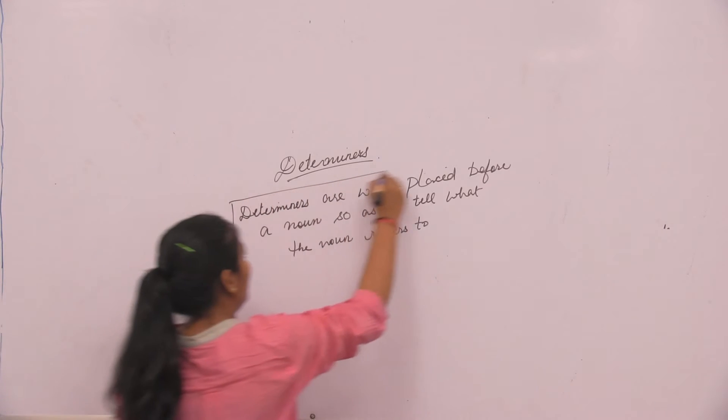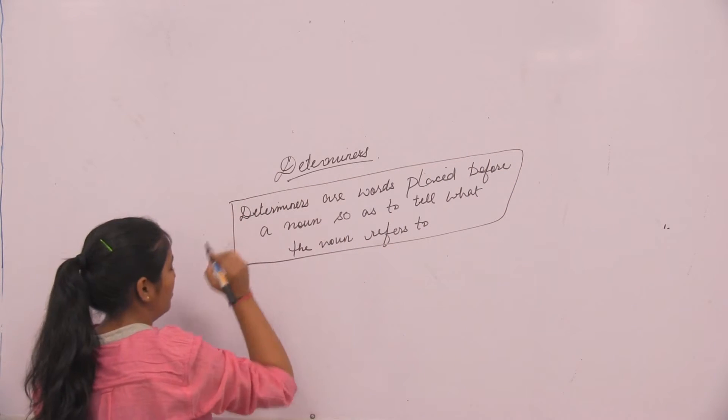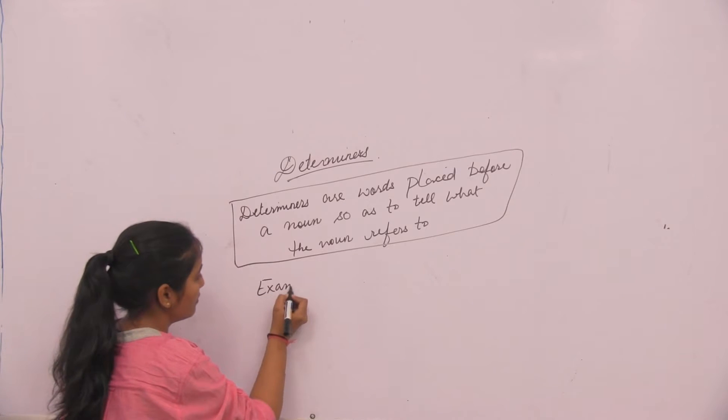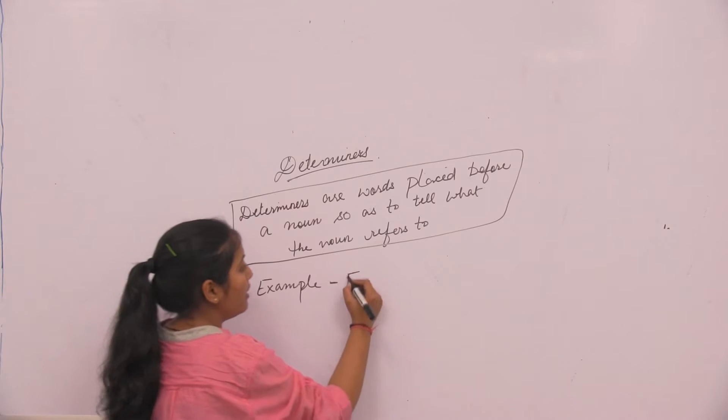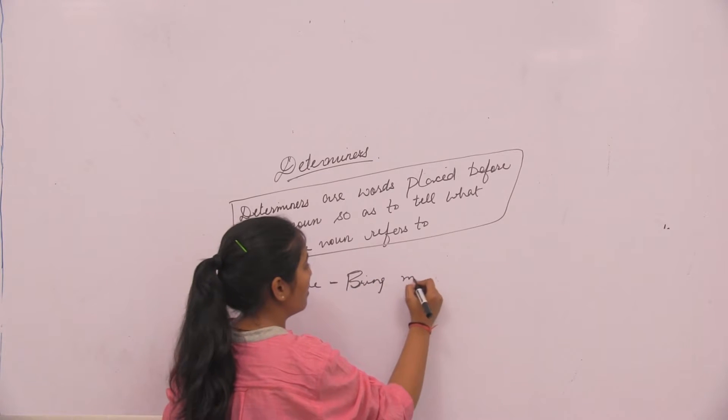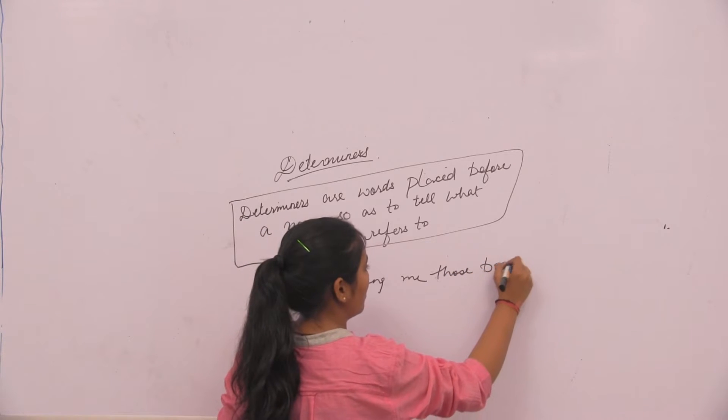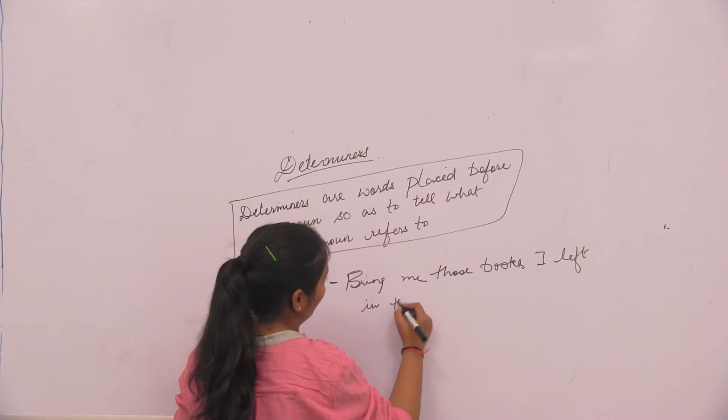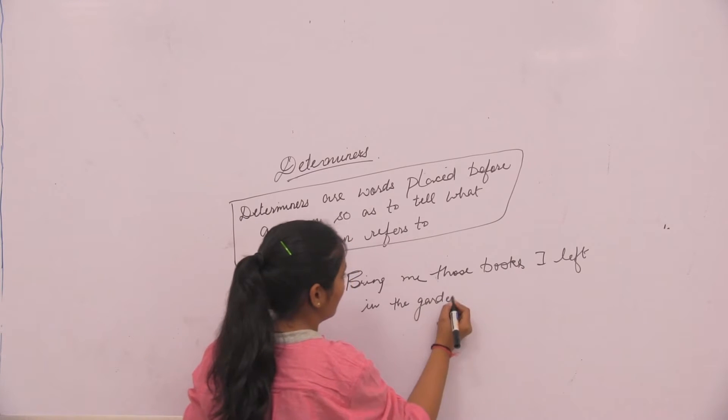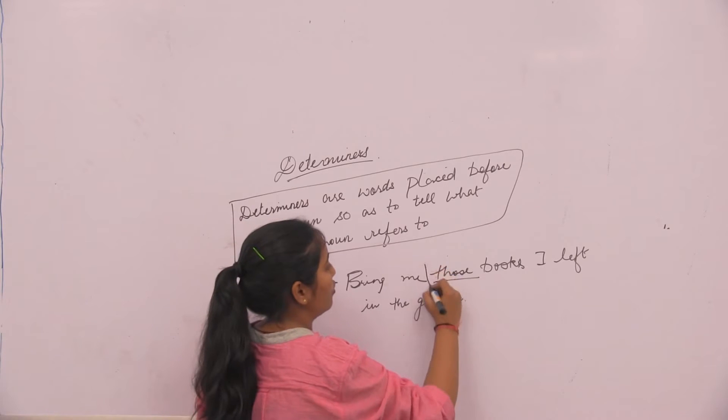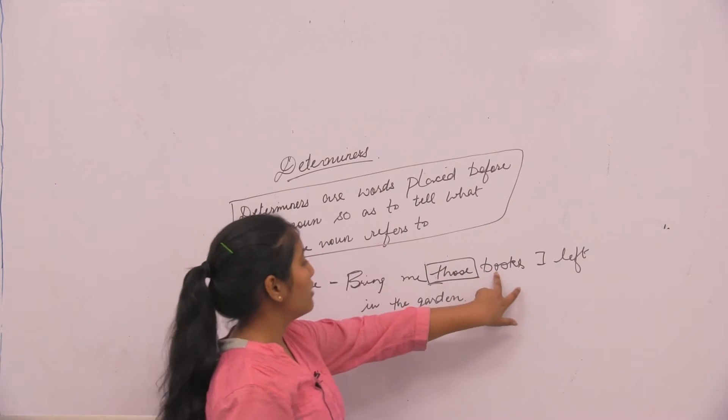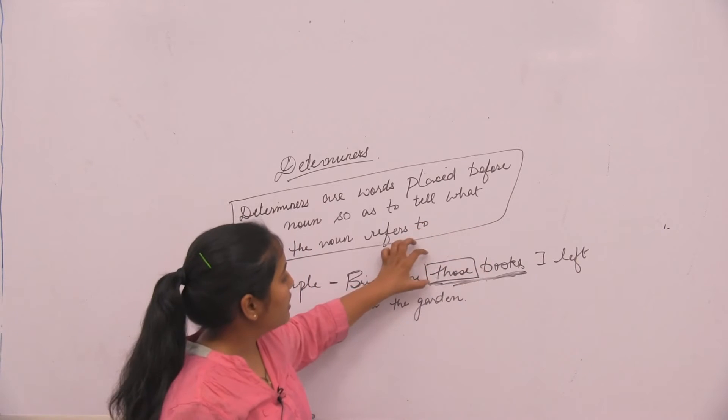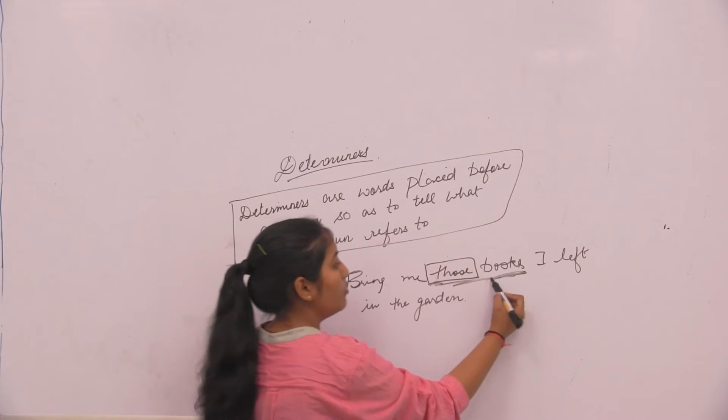Now we will quickly understand this by our example. Bring me those books I left in the garden. Here the determiner is those. The noun is books. We are referring to those books. The determiner is placed before a noun and we are referring to the books.